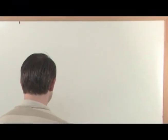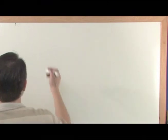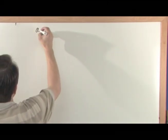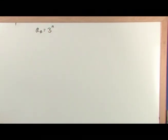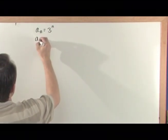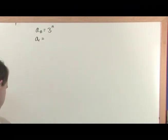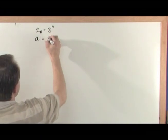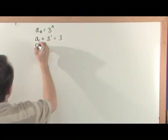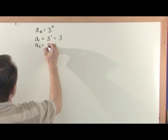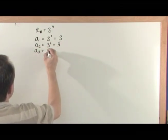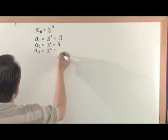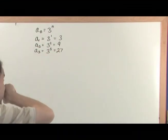So let's do another quick one, because we're just getting some practice here. Here's another sequence: if you wanted to write the first five terms of the sequence 3 to the nth. So again, you're just defining what the terms of the sequence are. If you were going to find a sub 1, the first element, it's going to be equal to 3 to the first power, which is 3. a sub 2 is 3 to the second power, which is 9. a sub 3 is 3 to the third power, which is 27.